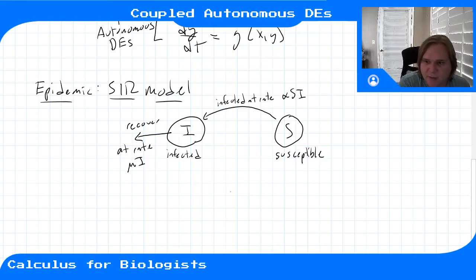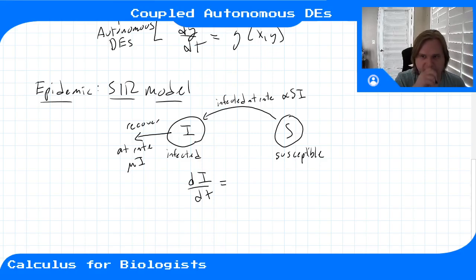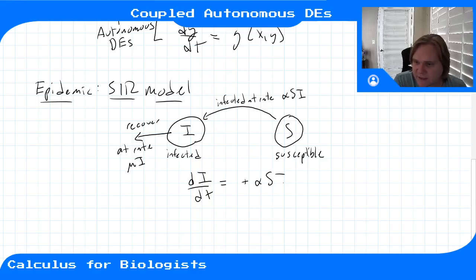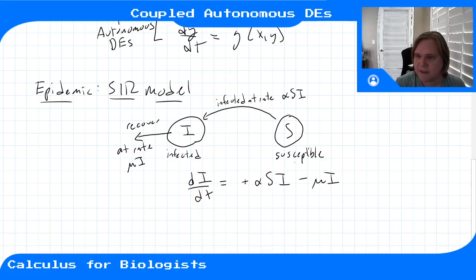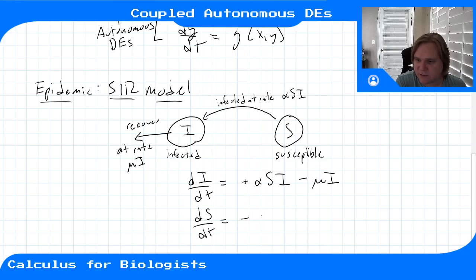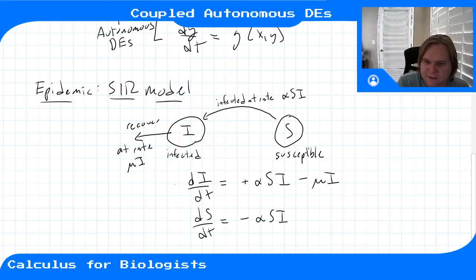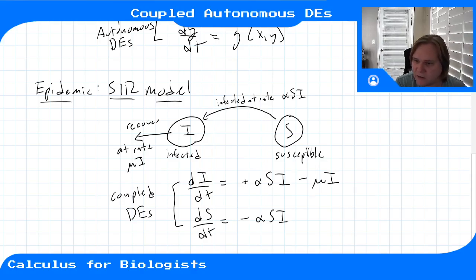Writing this in differential equation format: the change in infections dI/dt has new infections at rate +alpha·S·I and recovery at rate minus mu·I. The change in susceptibles dS/dt decreases at rate alpha·S·I as people catch the disease. This is a coupled autonomous system — no time appears on the right-hand side.